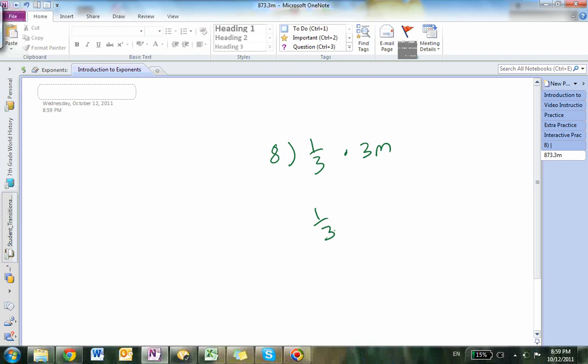I rewrote the problem to 1/3 times 3m/1, just to make it into a fraction, which still means 3m, just so it makes the problem easier. When you cross-cancel, it makes the problem easier.